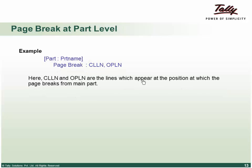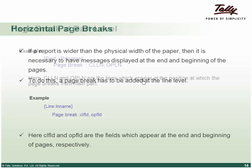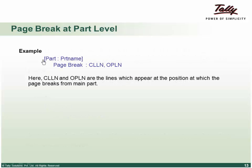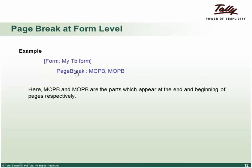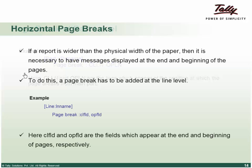At form level, at part level, or at line level — the only difference is: when you give a parts level page break, these would be the names of lines; at form level, these would be the names of parts. Similarly for horizontal, these would be names of fields — closing field and opening field. This is required when there are multiple parts.